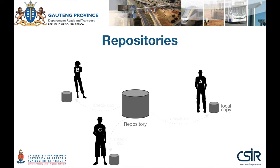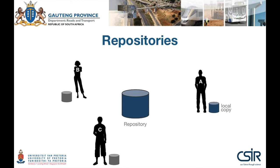When A makes changes to the document, he's not working on the repository itself but rather on his local copy. As soon as he starts editing his local copy, it becomes out of sync with the repository. Once he's finished, A should push his changes back and update the repository — that is called committing. One of the nice things about Subversion is that commits are incremental, meaning only the parts of the document that were changed are sent to the repository. Once the repository is updated, the other users should update their local copies.